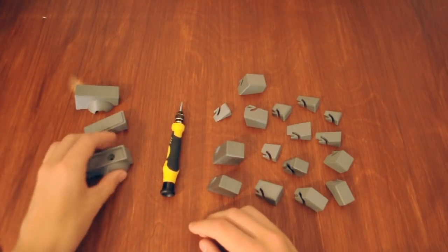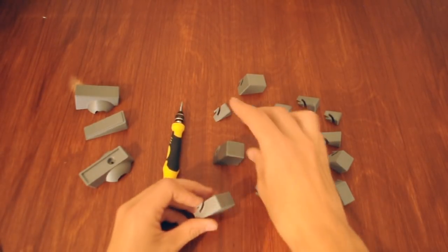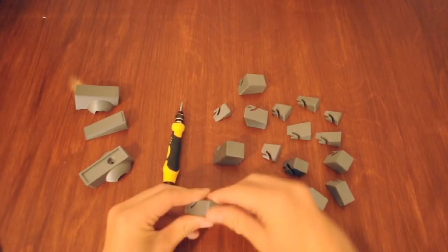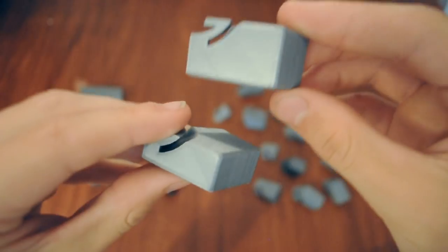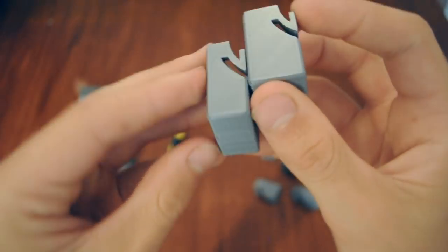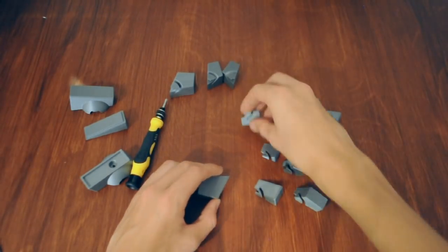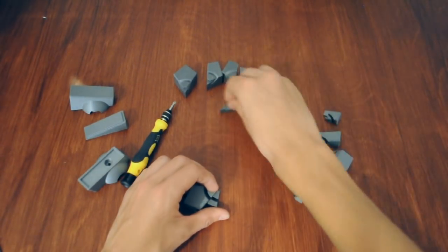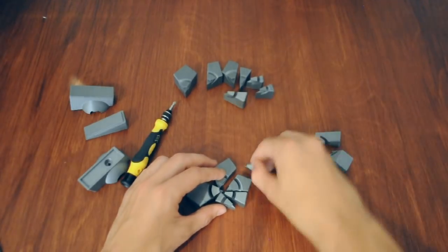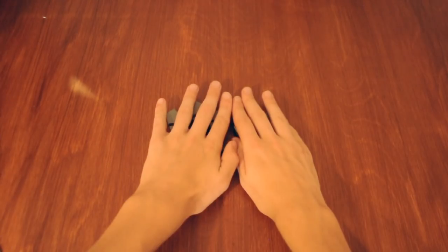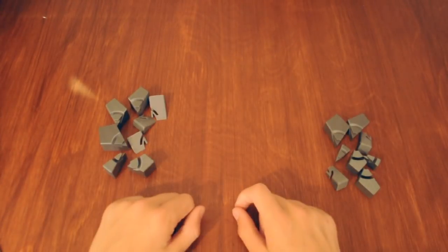Anyhow, so when assembling this puzzle, the first thing you're going to want to do is separate the thin pieces and the thick pieces. You see these two pieces?